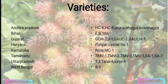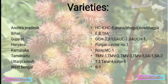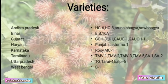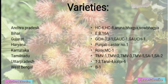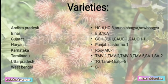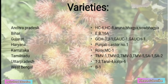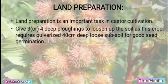Varieties — Andhra Pradesh: HC6, HC8, Aruna, Bagya, Sao Bagya. Bihar: EB 16A. Gujarat: GCH3, Ji. Haryana/Punjab: Castor No. 1. Karnataka: Rosi, MC1. Tamil Nadu: TMV1, TMV2, TMV3, TMV5, SA1, SA2. Uttar Pradesh: T3, Tarai 4. West Bengal: B1.